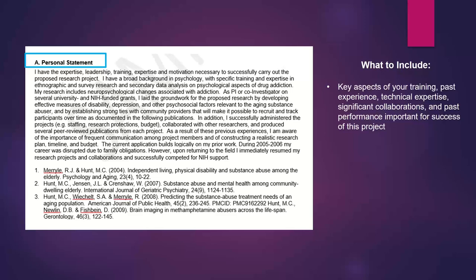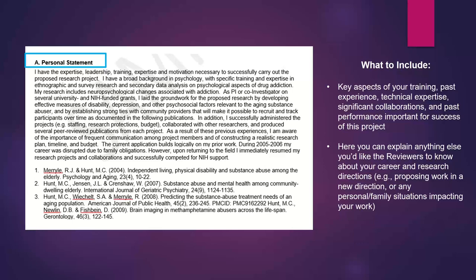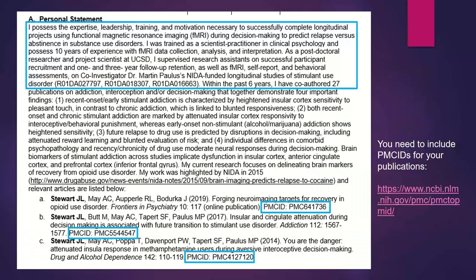In Section A you can also explain anything else you'd like reviewers to know about your career and research directions — say you're proposing work in a new direction, or any personal or family situations impacting your work. You can provide up to four publications or research products related to your skills or expertise in the area related to your proposed K project. You also need to include PMC IDs for your publications in your personal statement section and other sections of this biosketch. If there's no PMC ID for a particular paper, you can just say 'no PMC ID' to cover your bases.